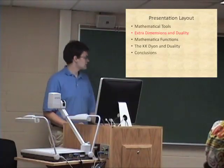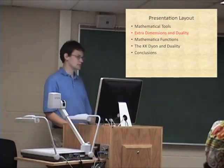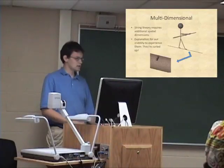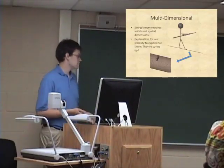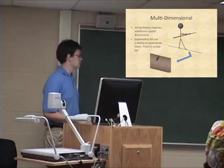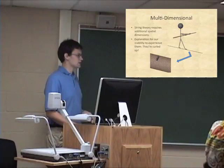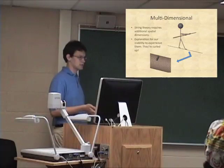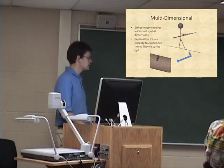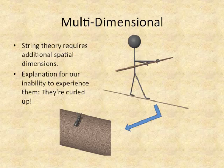We've talked about how space can curve, so now let's talk about extra dimensions and how those relate to this concept of duality. String theory requires that we have additional spatial dimensions — that's what the theory requires to work. You might say, well, I've been walking down the hall and I've never experienced a new way to go. Well, the explanation is they're all curled up — these extra dimensions are too small for us to experience.